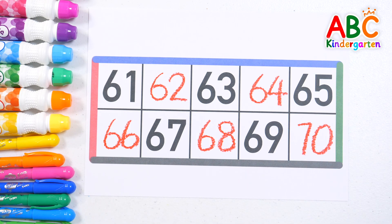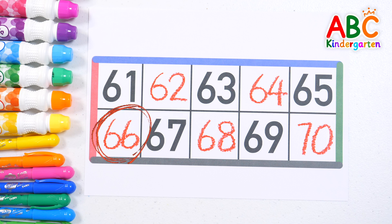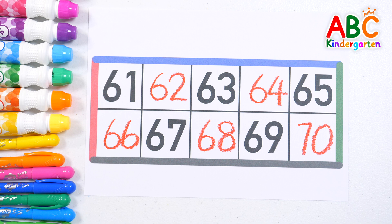65. 60, 60, 70 are even numbers. 61, 63, 65, 67, 69 are odd numbers.